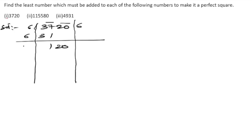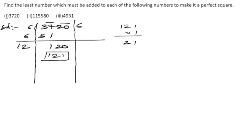Write 6 here. Six plus six is 12. For 120, in the 12-times table, the nearest product is 121. We get 121 when we multiply 12 by 1, but 121 exceeds 120. So we take 1 here and write down the square of 61.